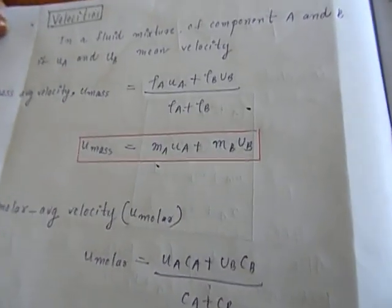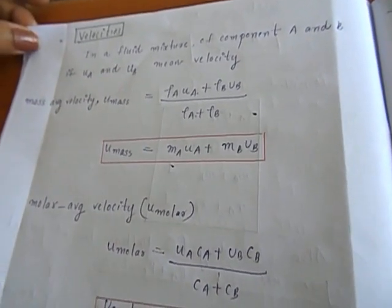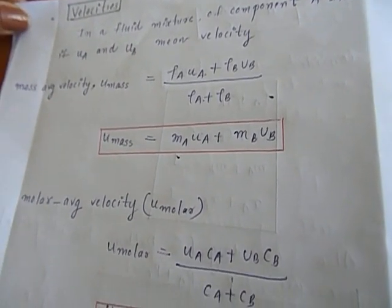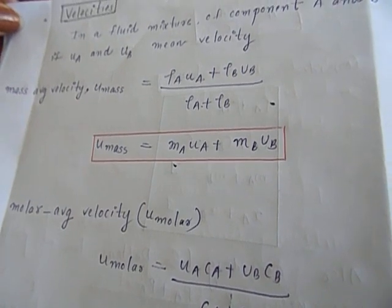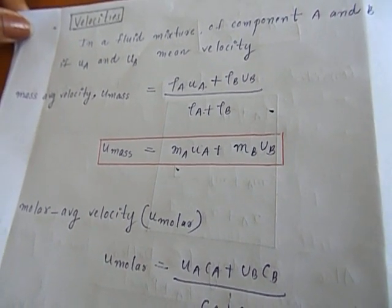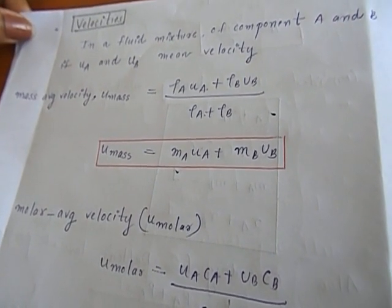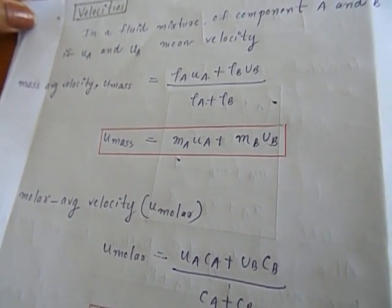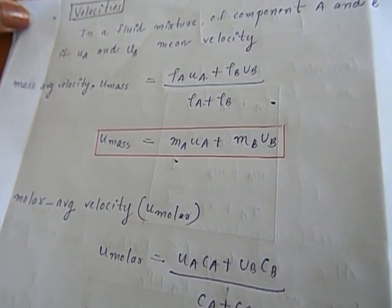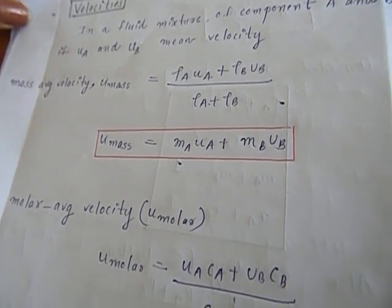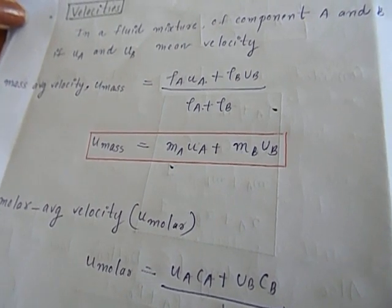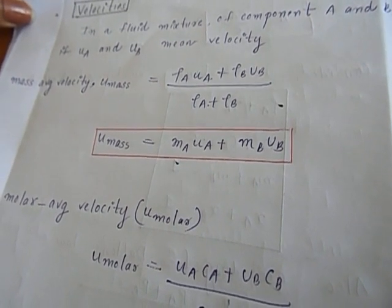Next, we are going to velocities. If you are considering a fluid mixture of component A and B, they are having different velocities according to their mass. We can explain the velocities in terms of mass average velocity and molar average velocity because one of the molecules depends on the mass and molecular weight.